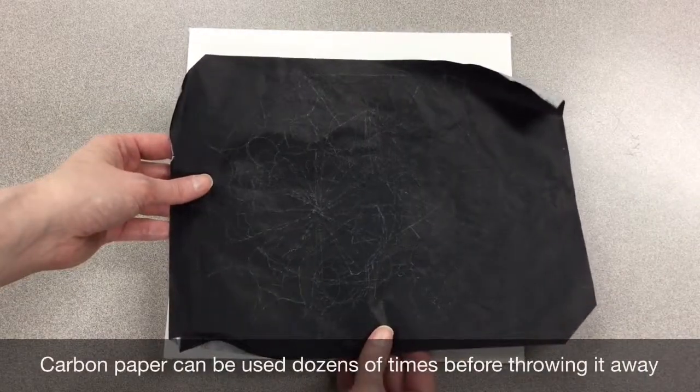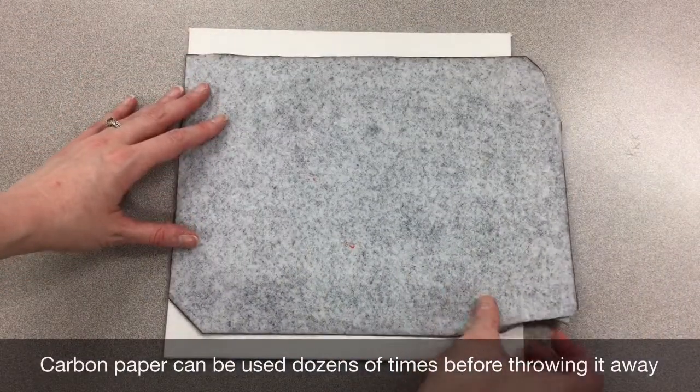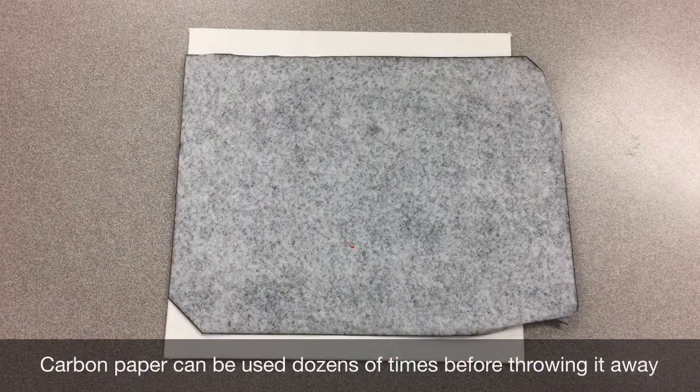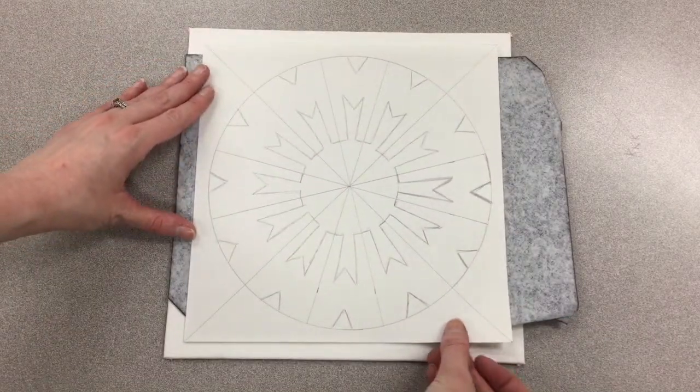I'm going to use something called carbon paper to transfer my design onto my canvas panel. I want to make sure that the dark side is down, and it's okay if it has lots of stray marks on it, because it can be used lots of times before it has to be thrown away.